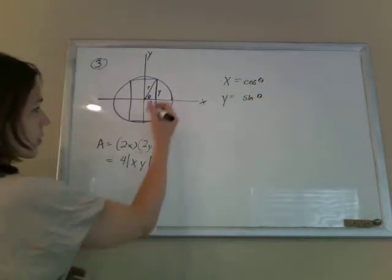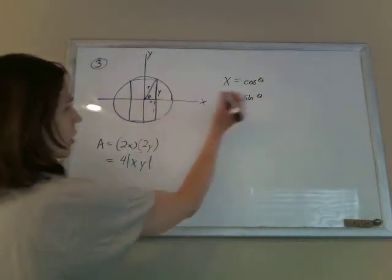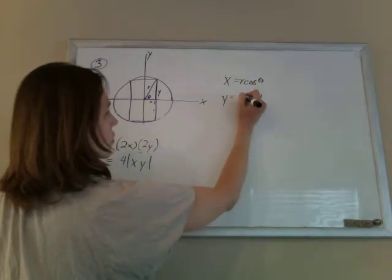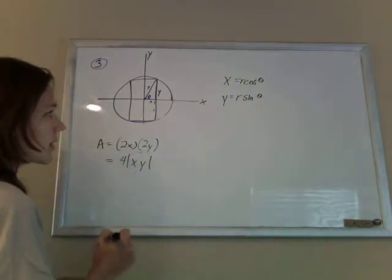Now here we're not on a unit circle. The radius isn't 1, the radius is r. So the more generic form is x is r cos theta, and y is r sin theta.